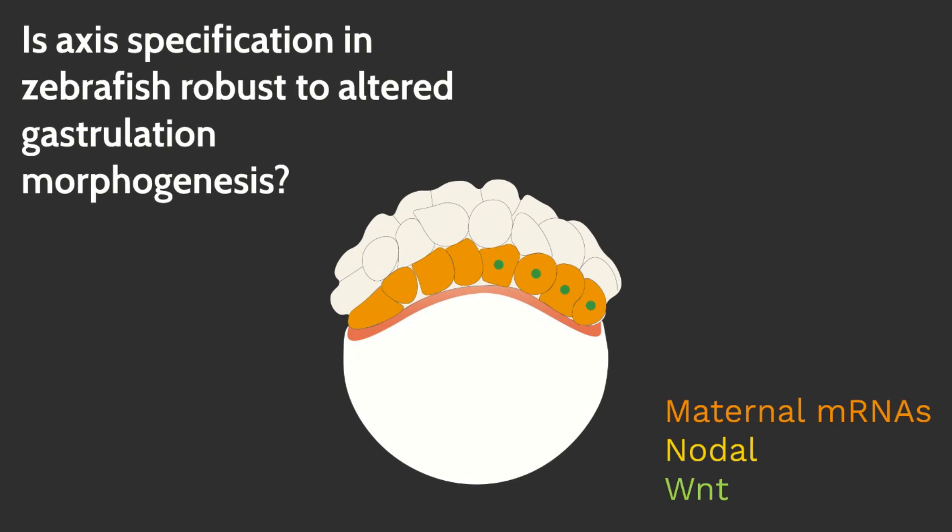Germ layer specification depends on the inheritance of maternal mRNAs, cortical rotation to generate a pole of beta-catenin activity, and the release of nodal signals from the yolk syncytial layer.